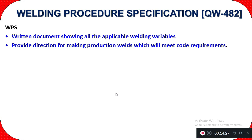The WPS provides direction for making the production weld — how you will make the production weld, what are the requirements for the base metal, whether stringer or weaving passes are used, and how many passes there are. The WPS is a written document that provides all this direction for production welding.